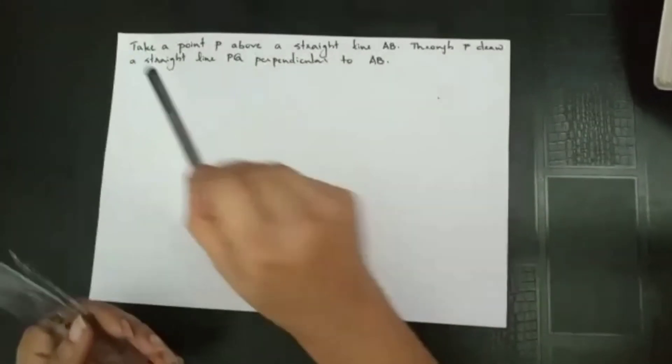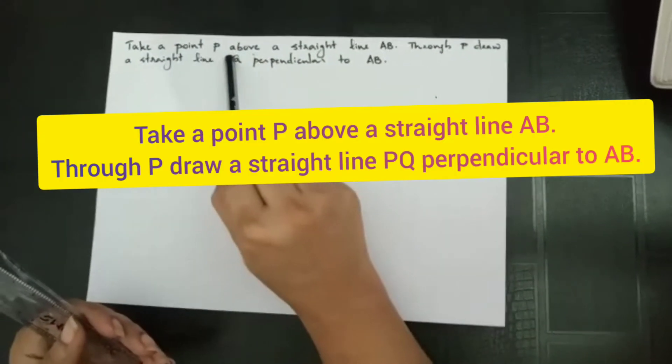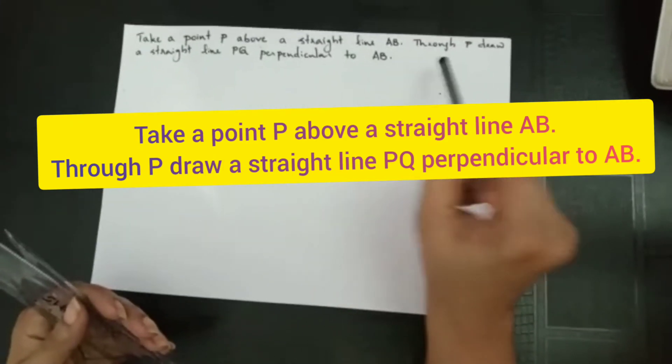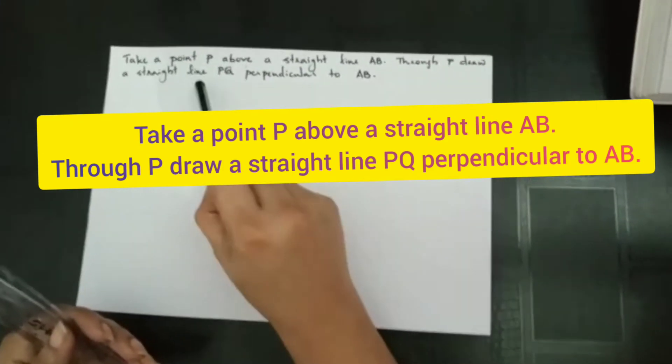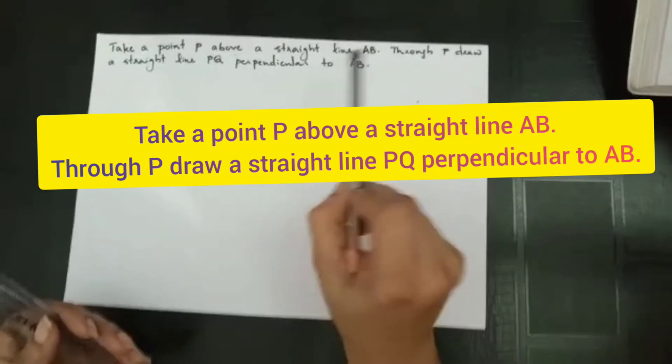So here the question is, take a point P above a straight line AB. Through P, draw a straight line PQ perpendicular to AB.